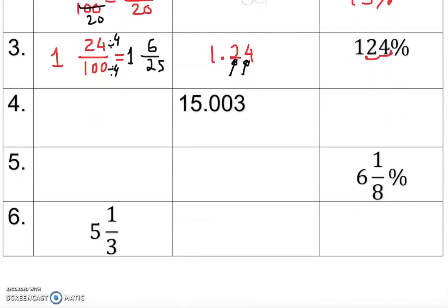Three more to go. This one gives us a decimal: 15.003. The whole number is 15. The decimal part is 0.003 — we read three thousandths — so we put down 3 over 1000. We cannot reduce it because 3 is on top and there is no common factor with 1000, so it stays as 3 over 1000.